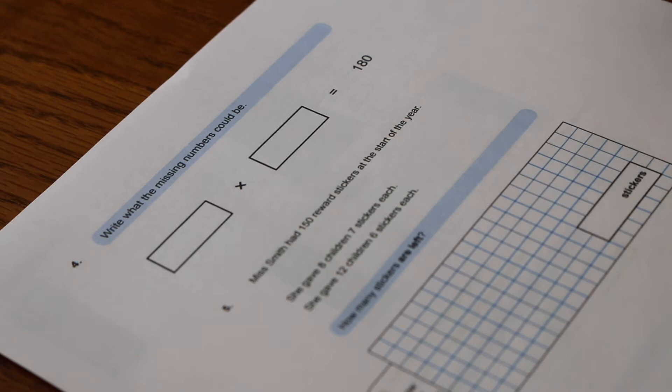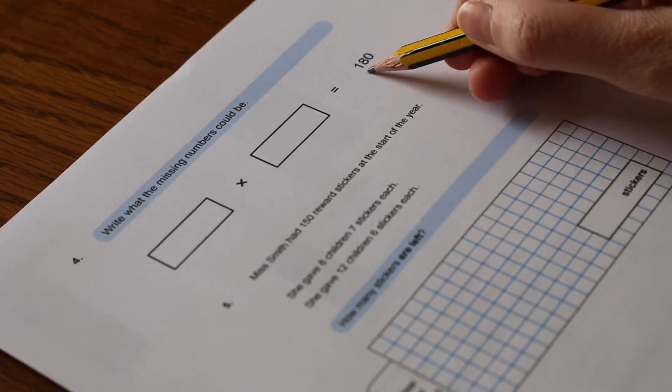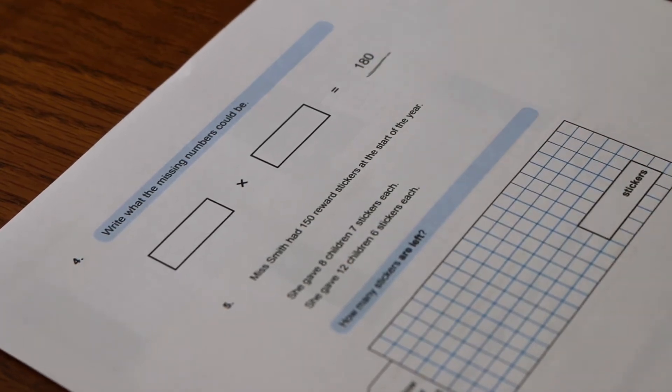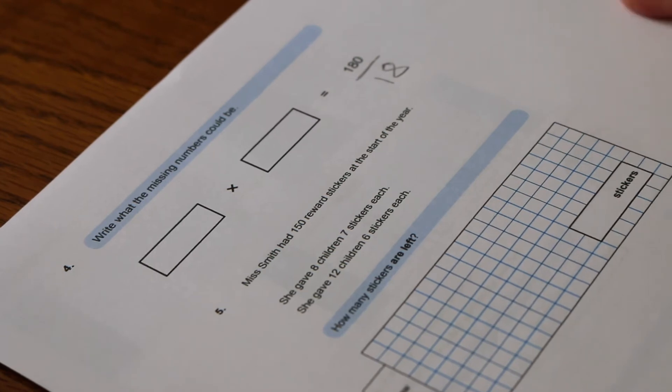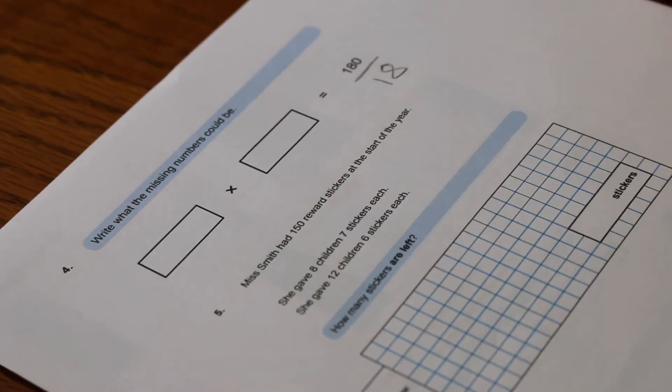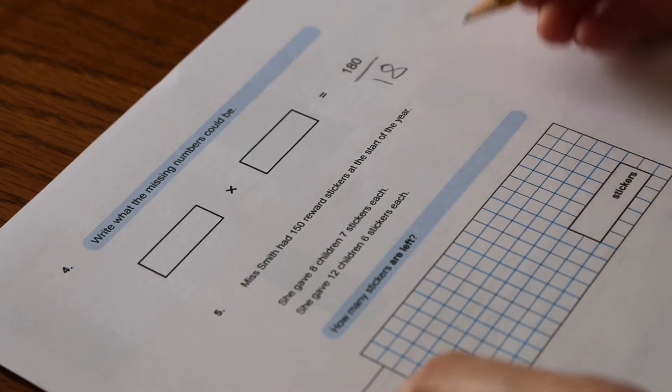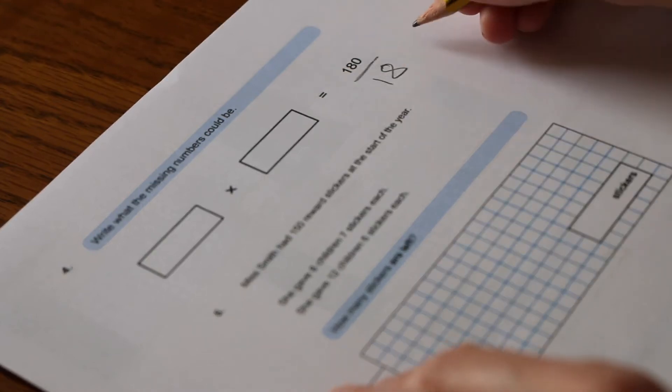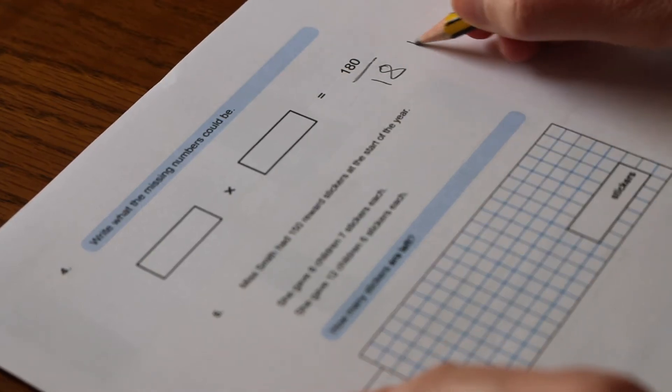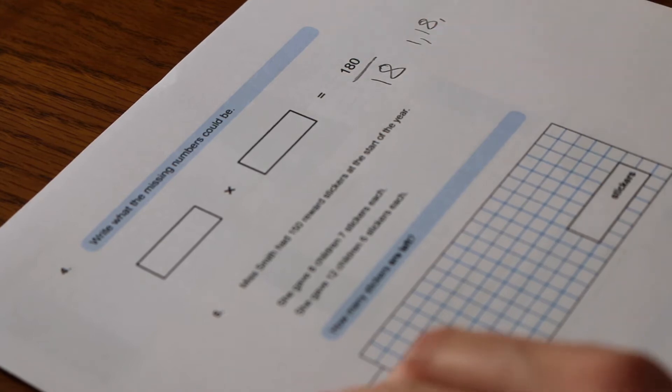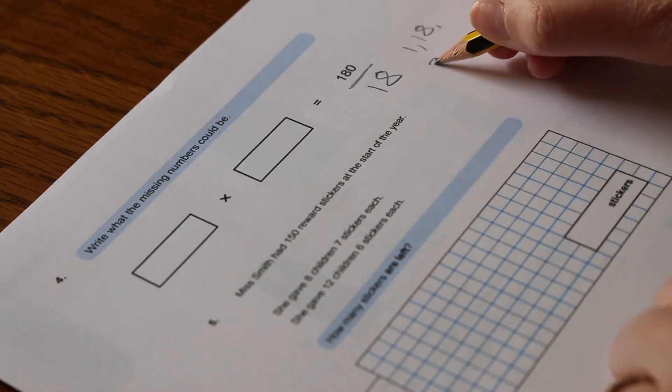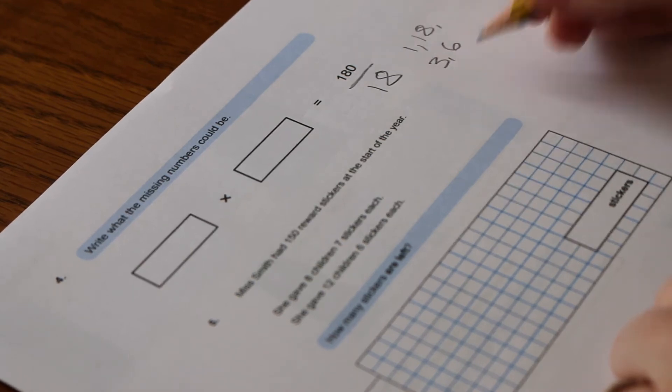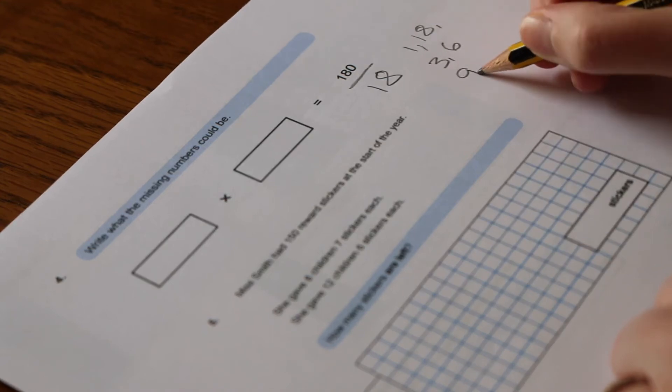Okay, looking at number 4. So the number we want to get to is 180, so it would be easier to think of how we can get to 18, as we know that 18 is in our times tables. So we know that the factors of 18 are 1, 18—so that's a factor pair of 18. Another factor pair is 3 and 6, and the other one is 9 and 2.